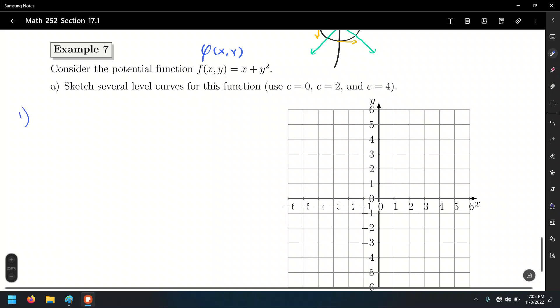For c equals to 0, and in this case, again, recall that we set this equal to 0, so we get x plus y squared equals to 0, and x equals to negative y squared. In this case, I'm solving for x because it's easier to solve for x rather than solving for y because otherwise it would give us two equations, two solutions.